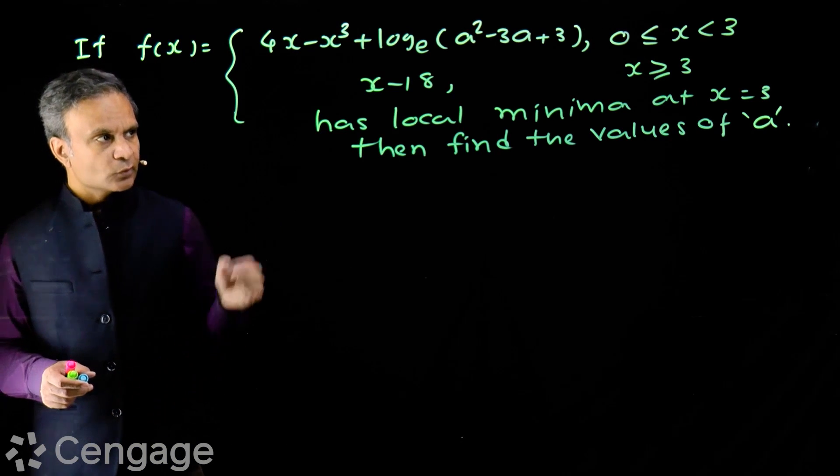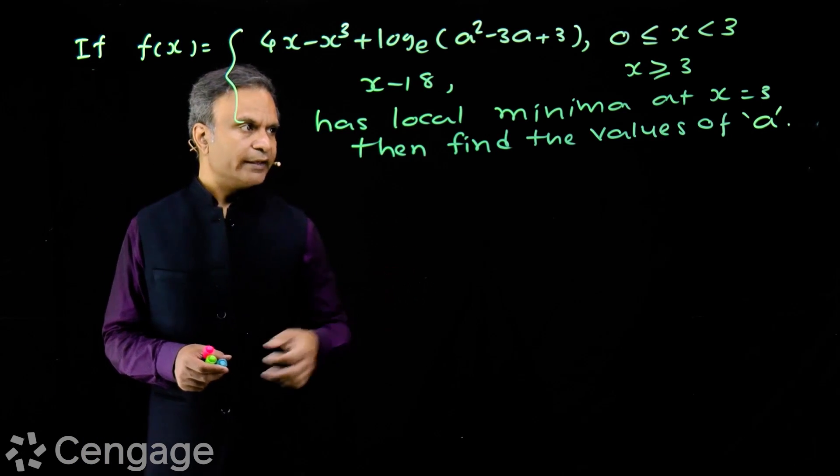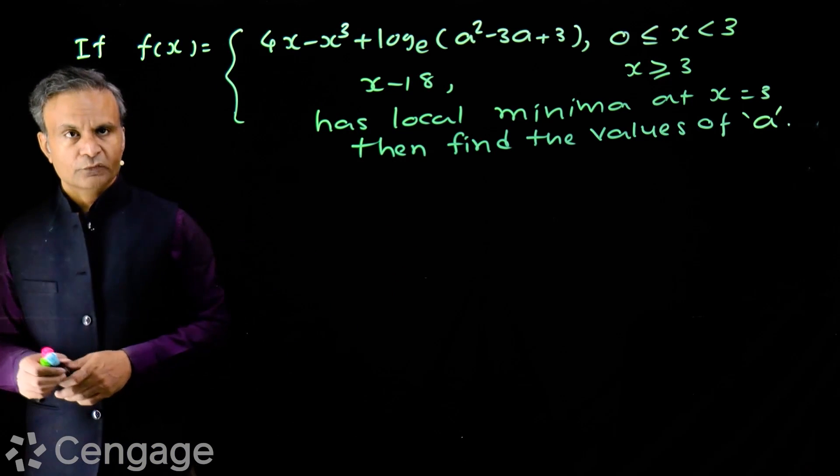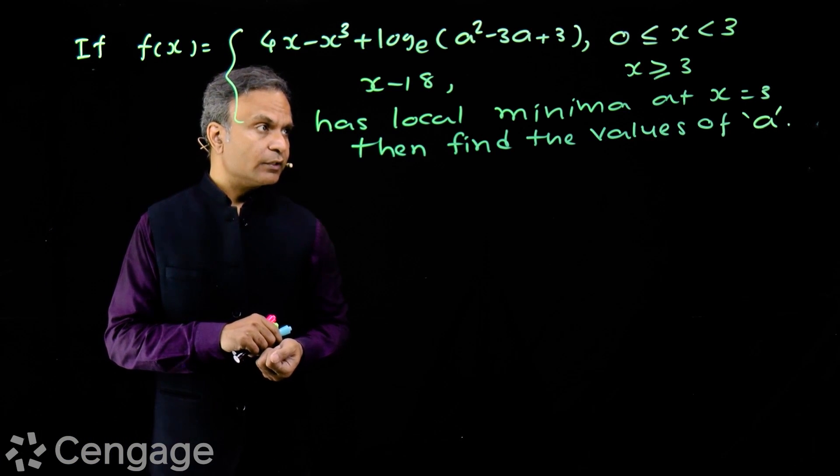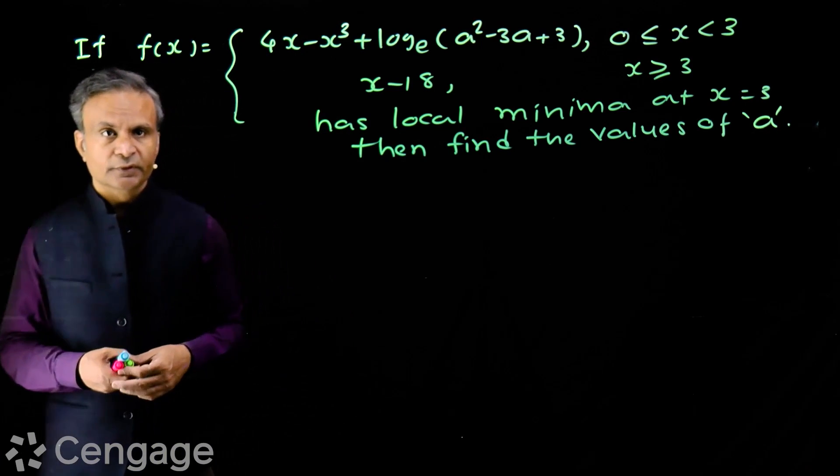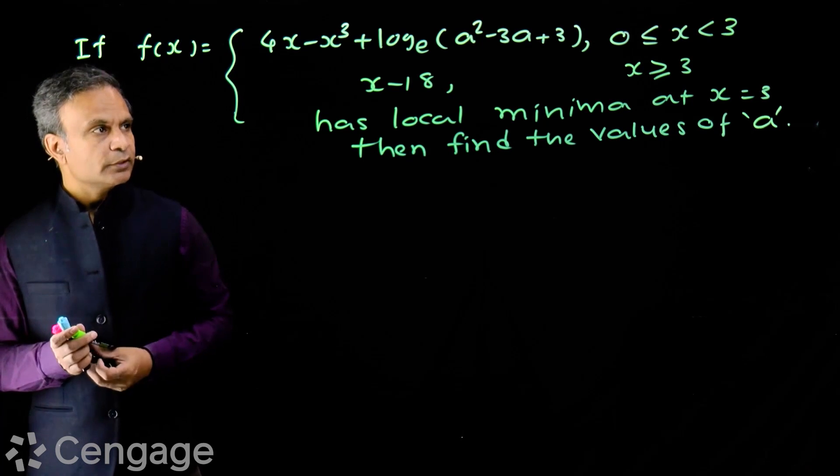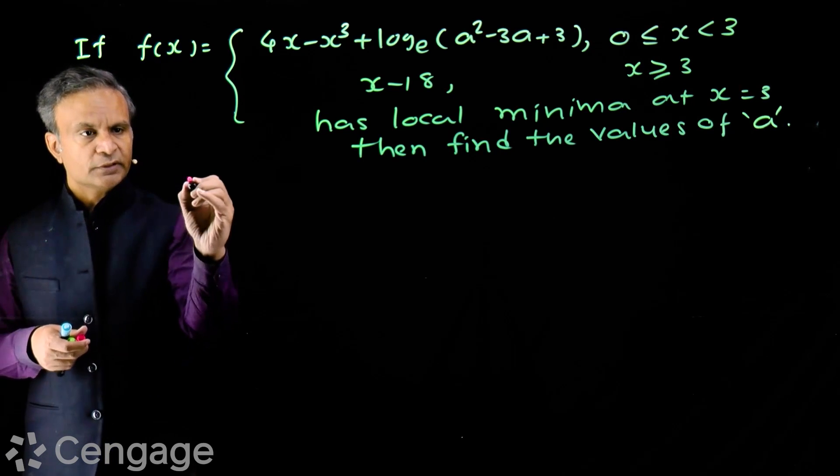If this function has local minima at x equals 3, then we have to find the values of a. Now, what is f of 3?